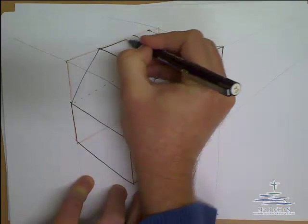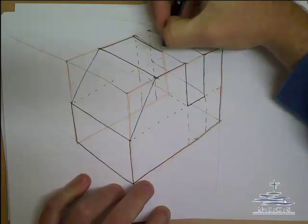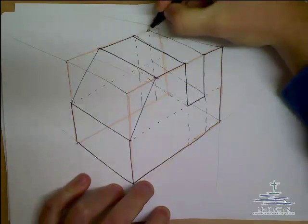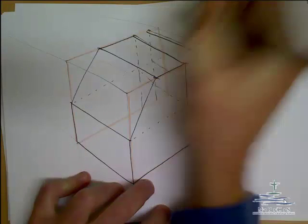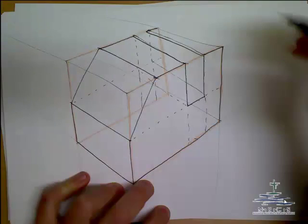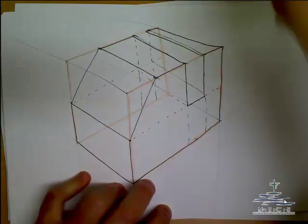So then we firm in our lines over here, firm in these guys and I might just bring that out a little bit because the perspective is a little bit out. Join that across and you can start to see it almost looks like a little bit of a roller coaster carriage or something.